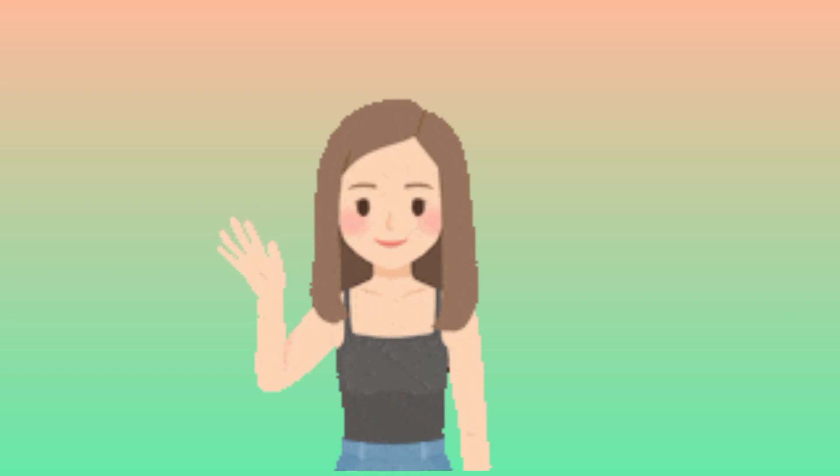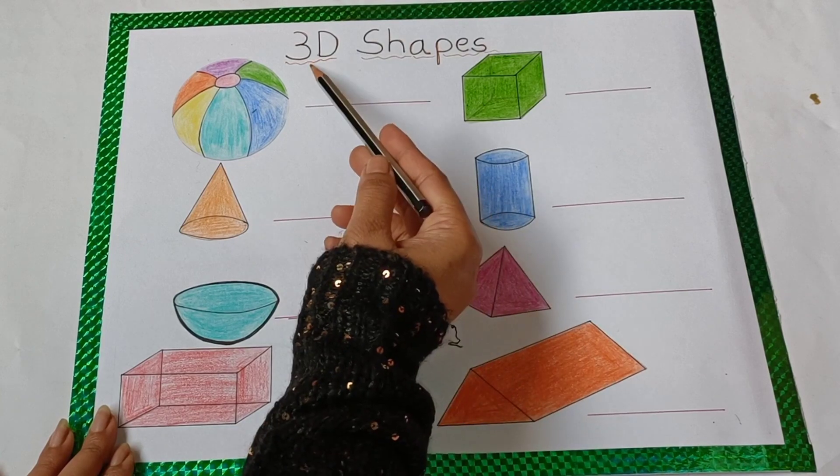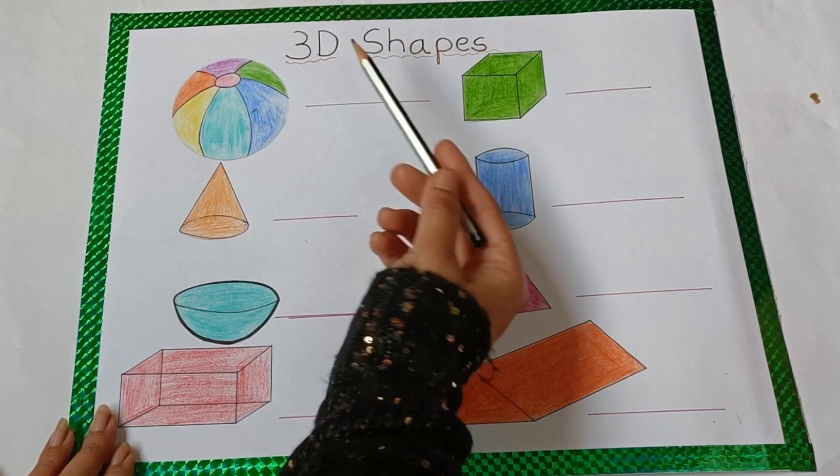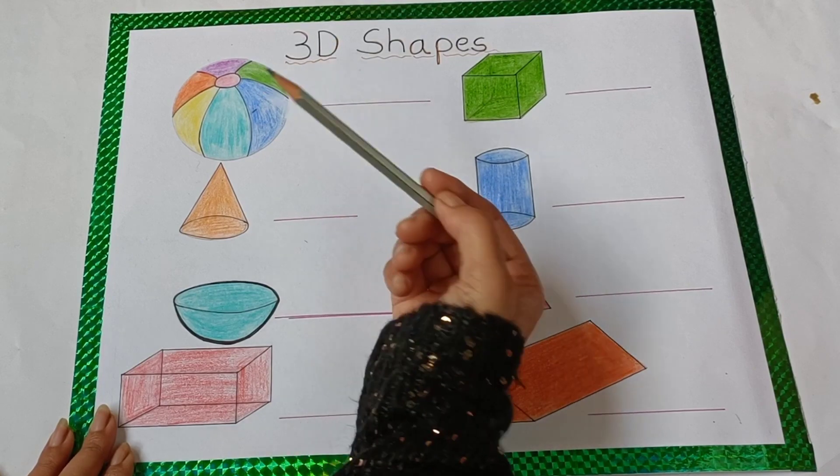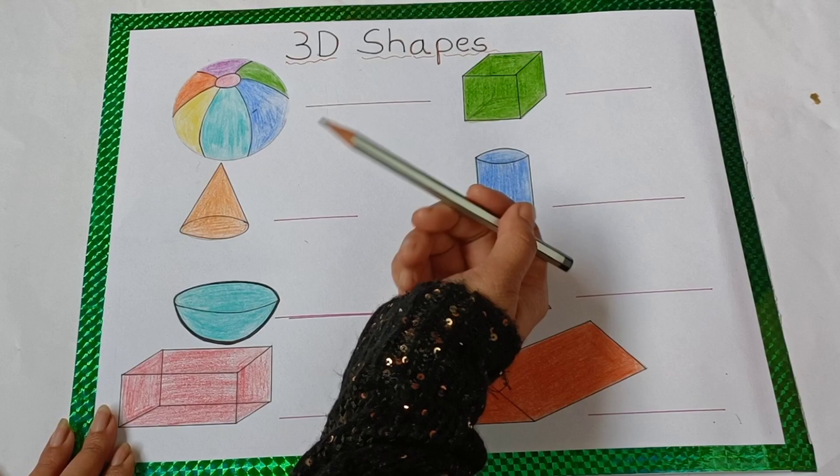Hi kids! Today in Mathematics, we are going to learn 3D shapes names. What do you mean by 3D shapes? 3D means three dimensions. So children, let's start learning.